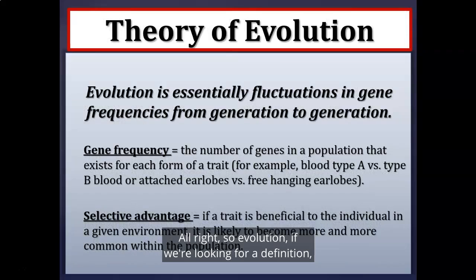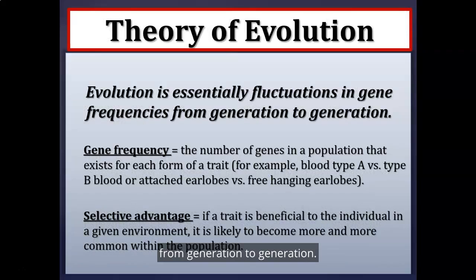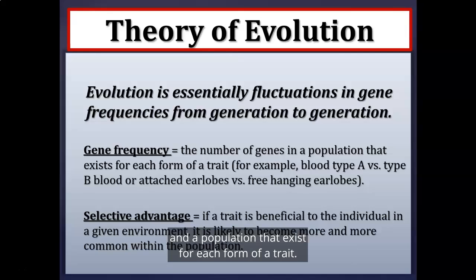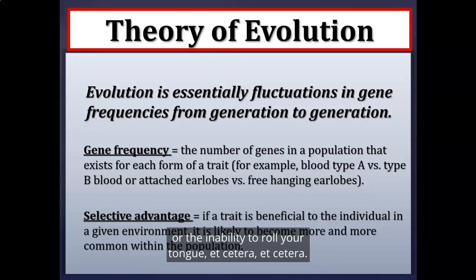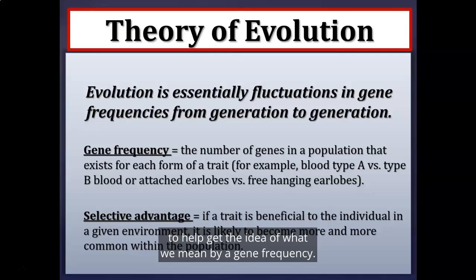Evolution is essentially fluctuations in gene frequencies from generation to generation. A gene frequency is the number of genes in a population that exists for each form of a trait — for example, blood type, attached versus free-hanging earlobes, or the ability to roll your tongue. We'll look at simple monohybrid Punnett squares to help understand what we mean by gene frequency.